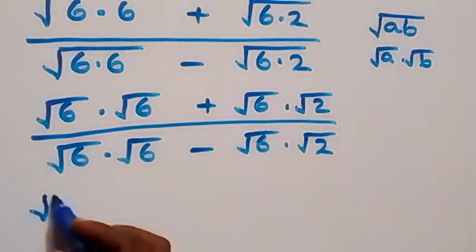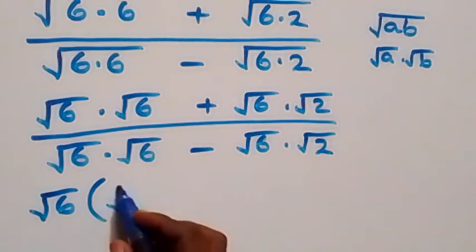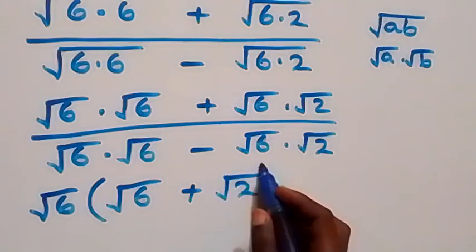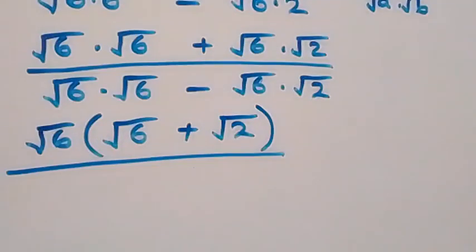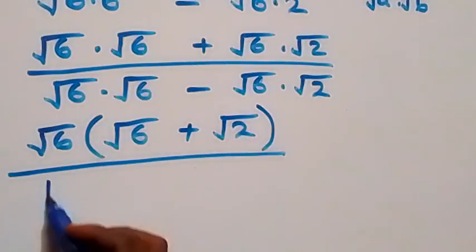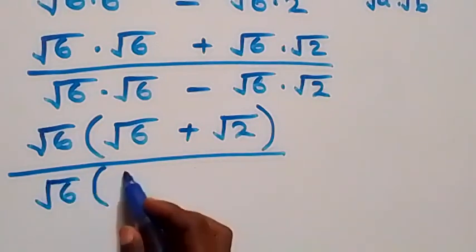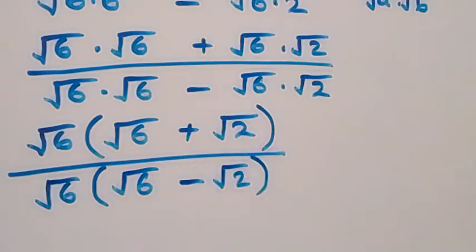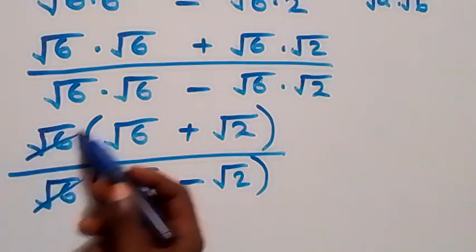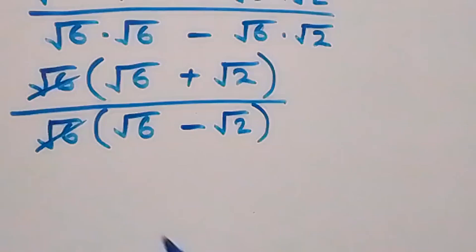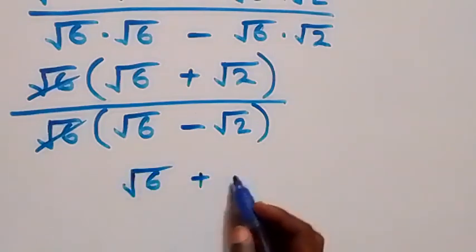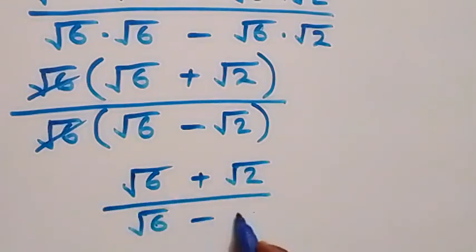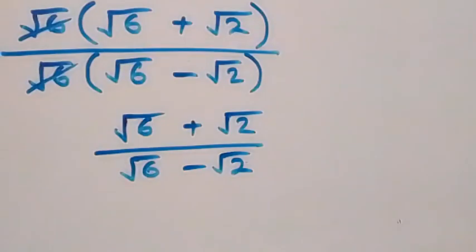From here we factor root 6 out as common. In the numerator we have root 6 into bracket (root 6 plus root 2), and in the denominator root 6 into bracket (root 6 minus root 2). Root 6 cancels, leaving us with (root 6 plus root 2) over (root 6 minus root 2).